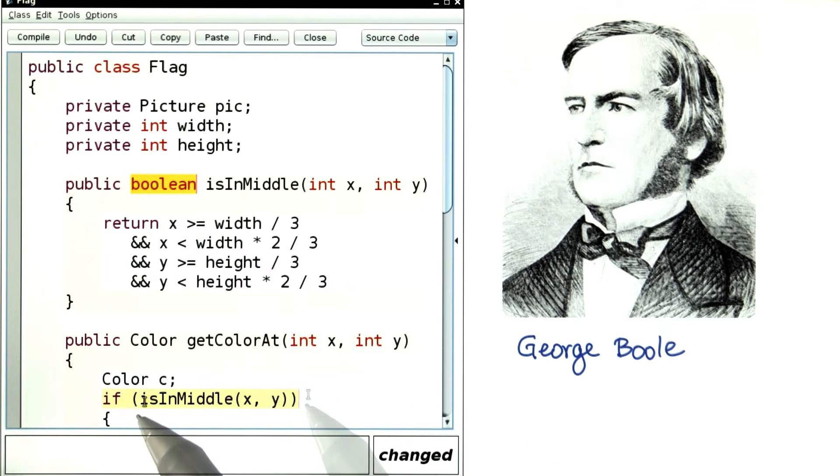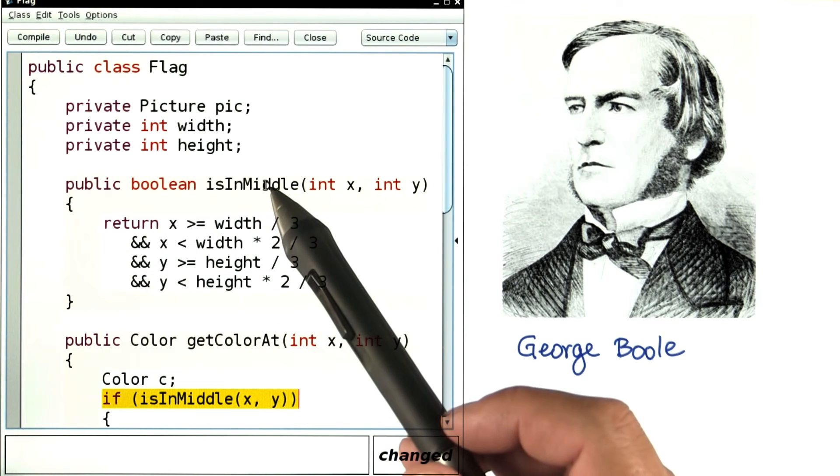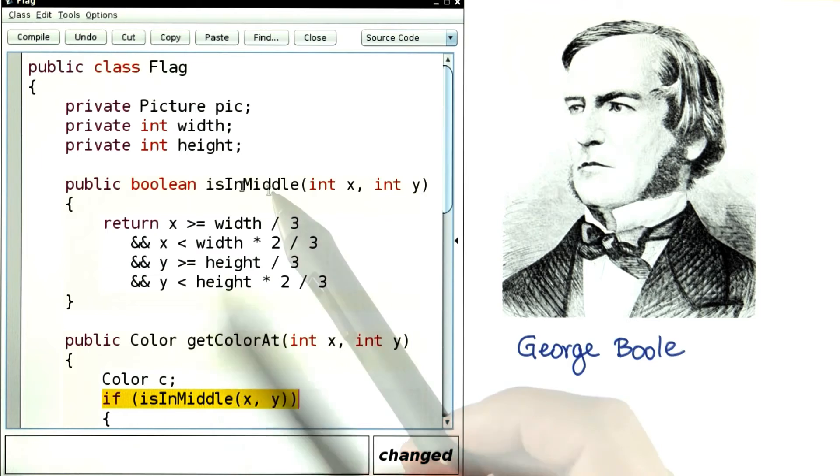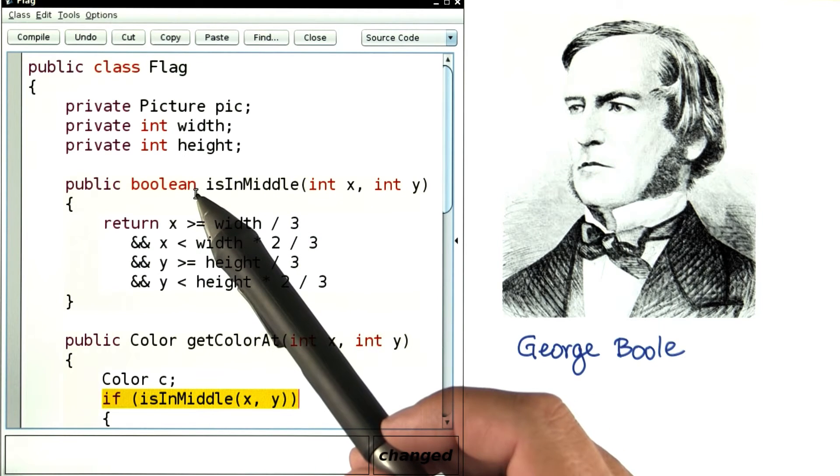Then you can use that method inside an if statement just as much as you can use the relational operators. You would want to do that whenever a condition has become so complicated that you want to put it inside its own method. You can also declare variables of Boolean type. Let me give you a quick example.